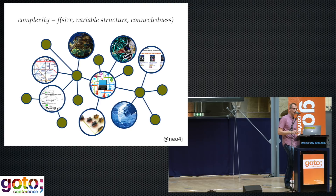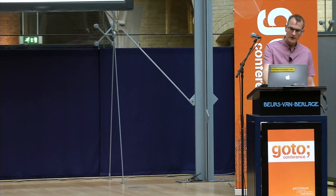So for me, graphs are great at managing that kind of complexity — large-ish volumes of variably structured and densely connected data — where we need to accommodate all of that variable structure and understand something about the connections and the paths through the system in order to be able to answer the questions that we need to.